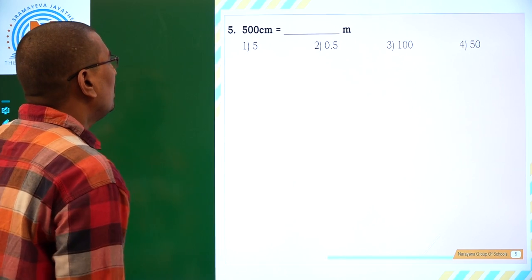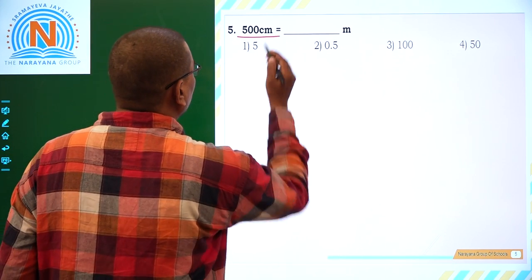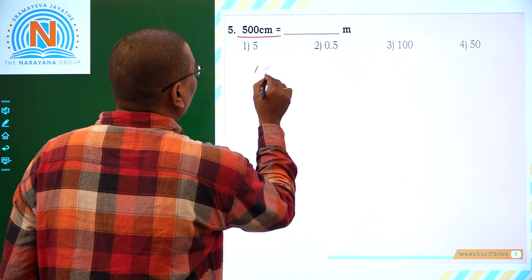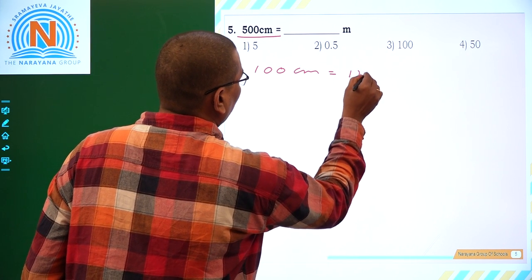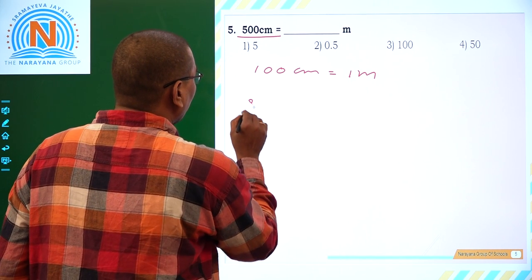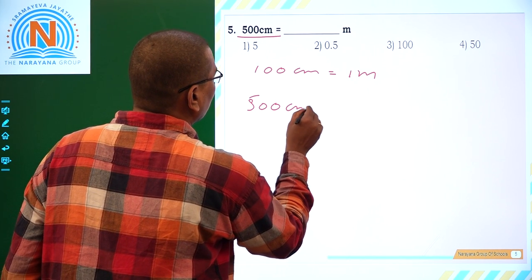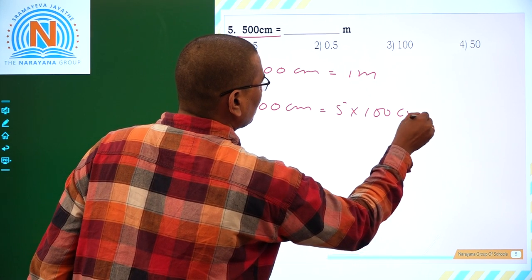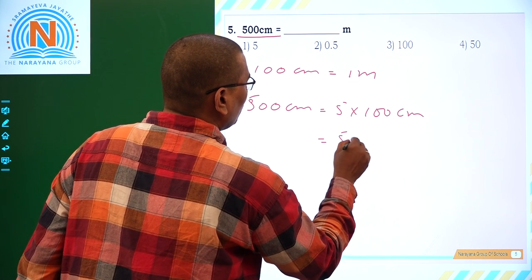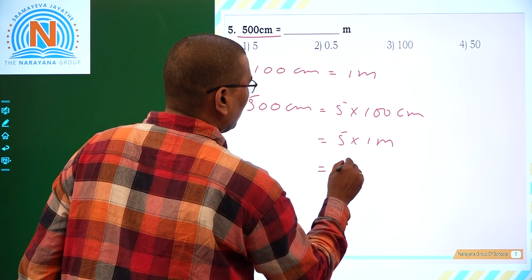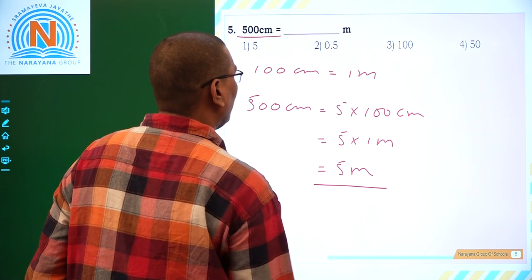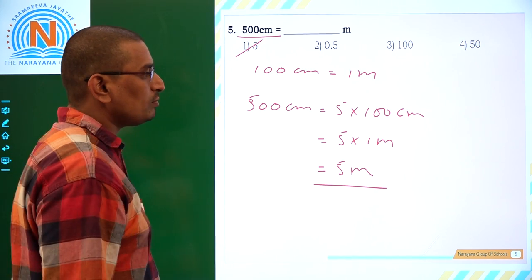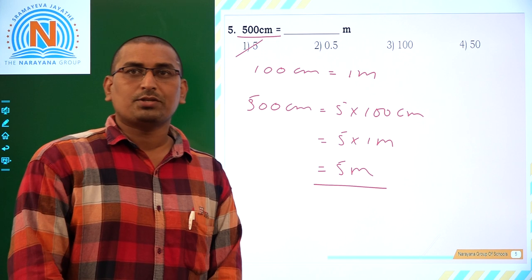Now coming to next one: 500 cm is equal to... As we know, 100 cm is equal to 1 meter. So 500 cm is written as 5 times 100 cm, which is equal to 5 times 1 meter, simply 5 meters. Which is option 1. Hope you all understood, thank you so much.